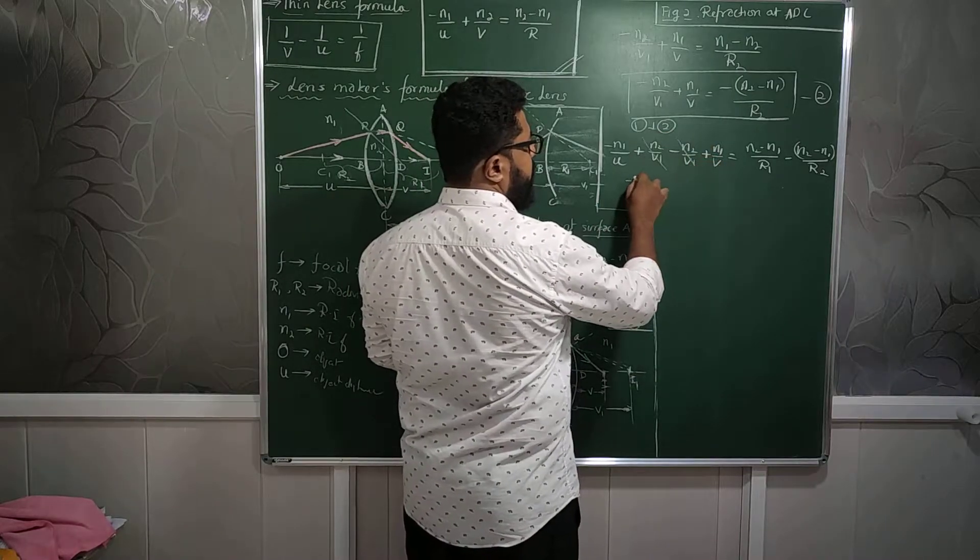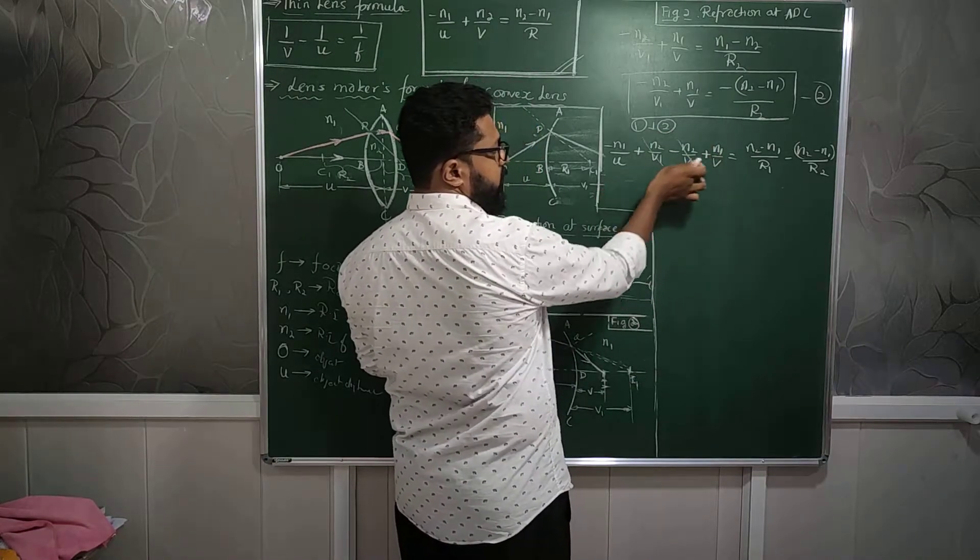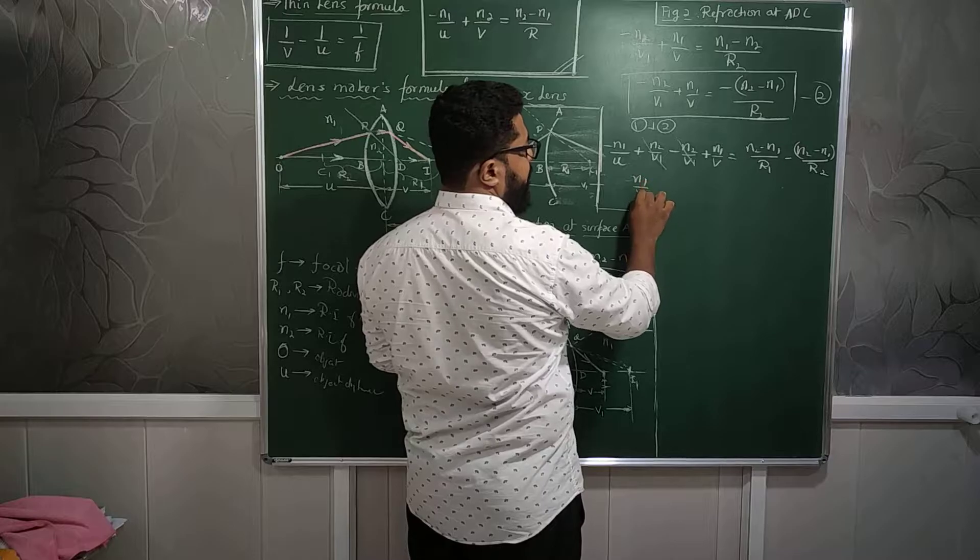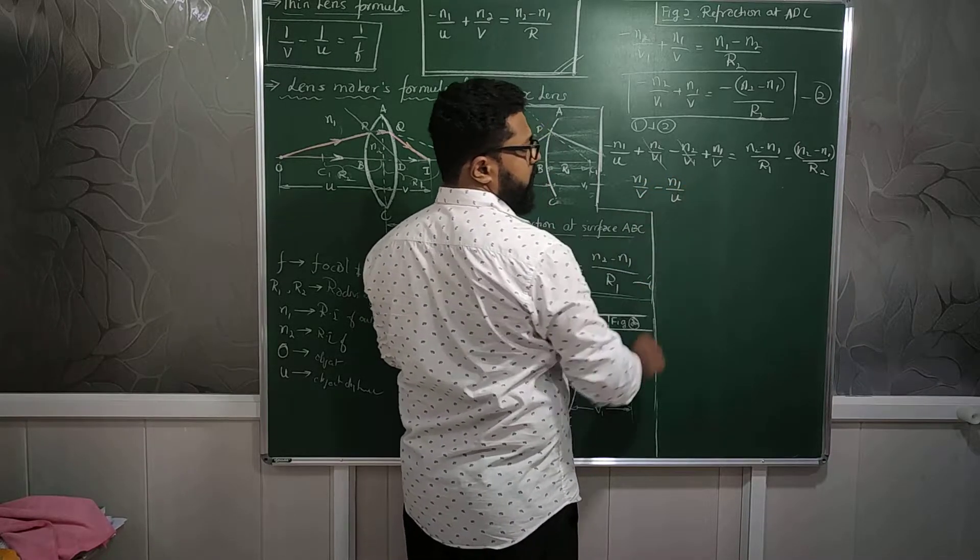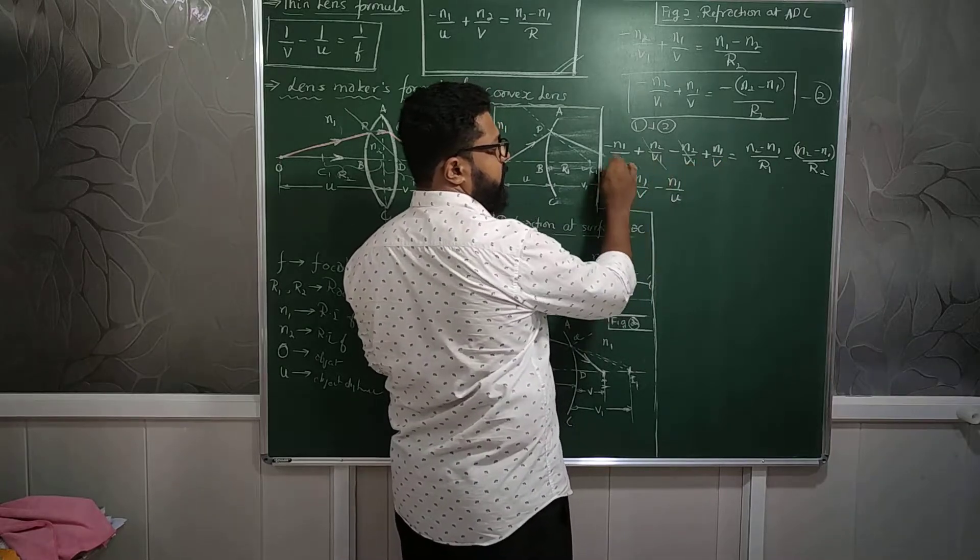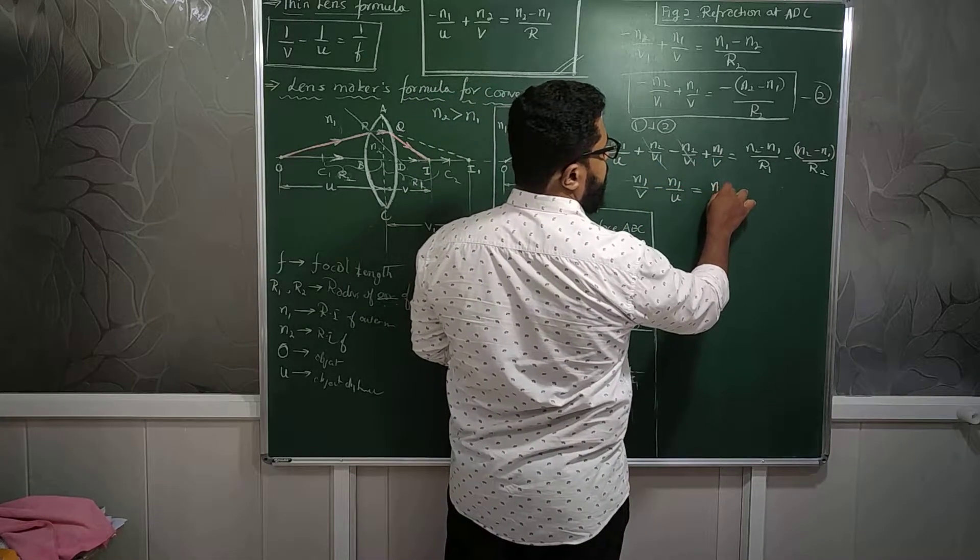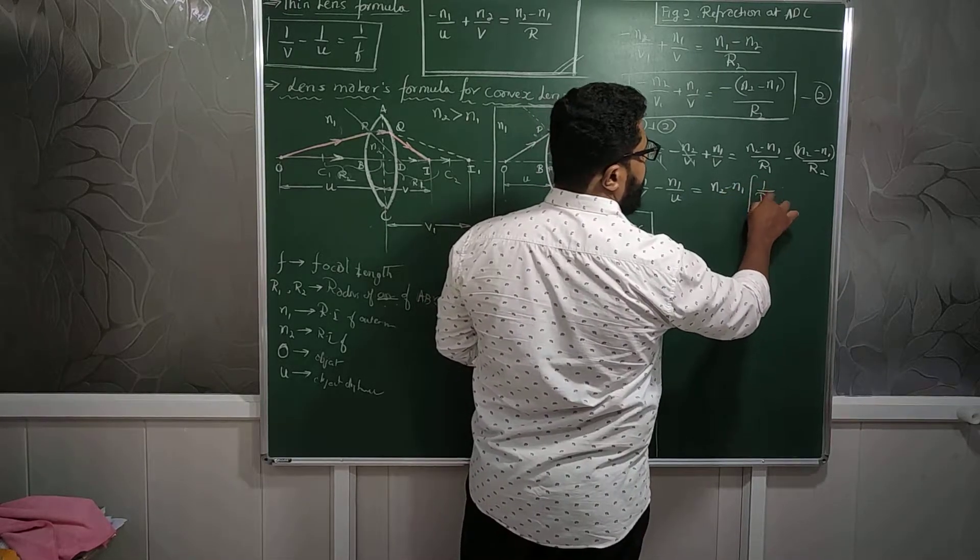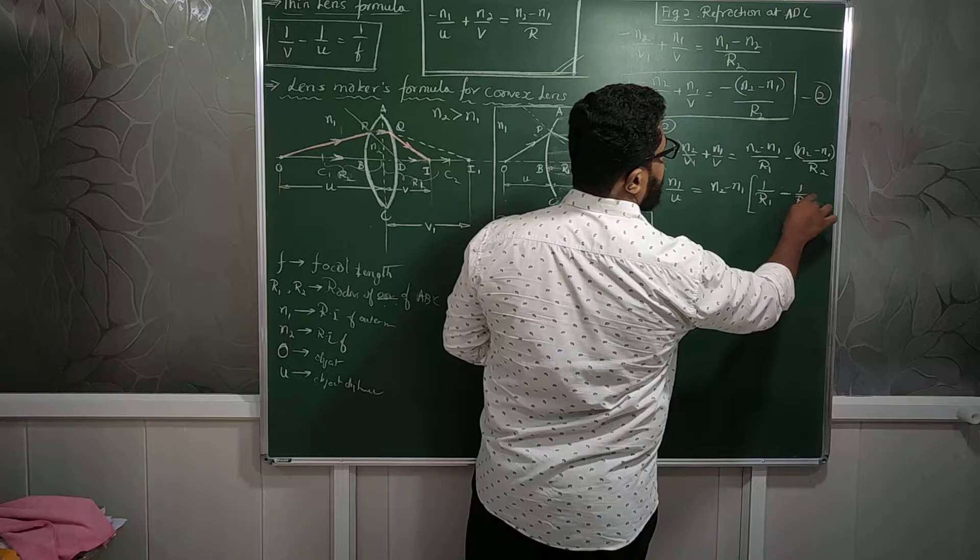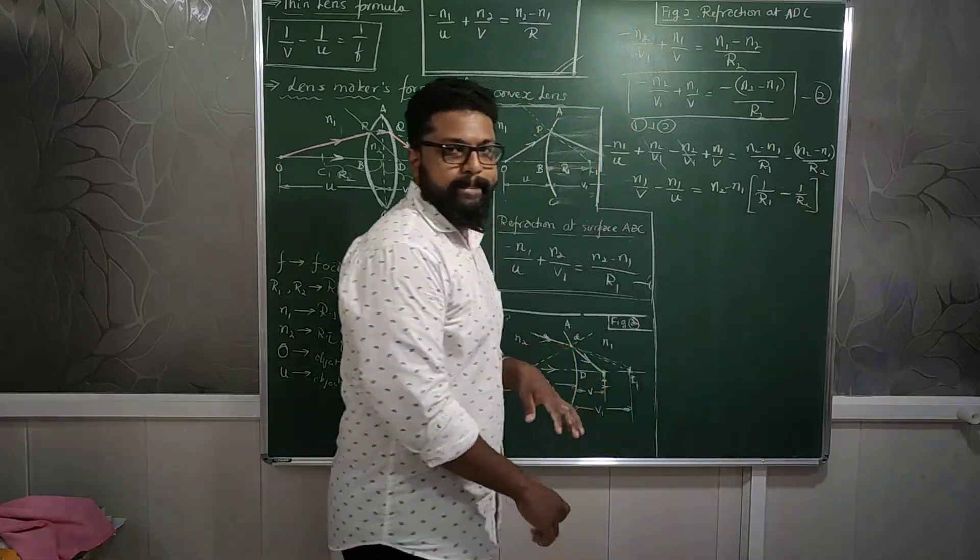And easily this thing cancels. Remaining will be, I have written the first plus sign over here. N1 divided by V minus N1 divided by U. So here N1, N2 minus N1 I take it out as a common. Remaining will be 1 by R1 minus 1 by R2.